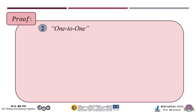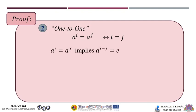The second step is to show that f is one-to-one. We have a^i = a^j if and only if i = j. Note that a^i = a^j implies a^(i−j) = e, so we must have i − j = 0, which means i = j. Therefore, f is one-to-one.